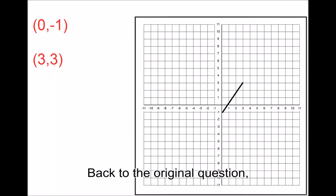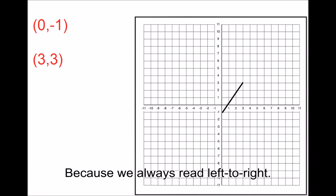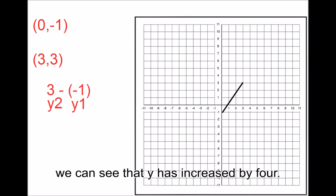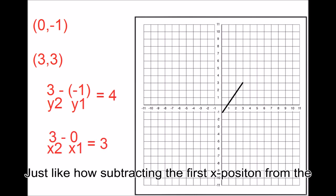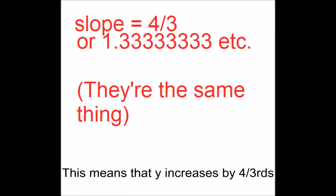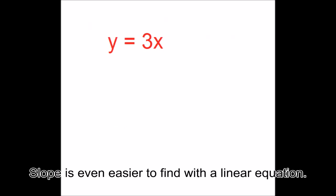Back to the original question. The graph starts on point 0,-1 and ends on point 3,3. Because we always read left to right. By subtracting the first y position from the second, we can see that y has increased by 4. Just like how subtracting the first x position from the final x position shows us how much x increased. Now we know that y increases by 4 every time x increases by 3. This means that y increases by 4 thirds, every time x increases by 1. Slope is even easier to find with a linear equation.